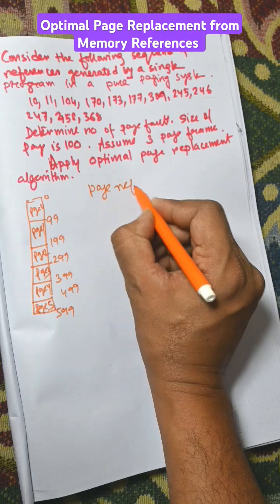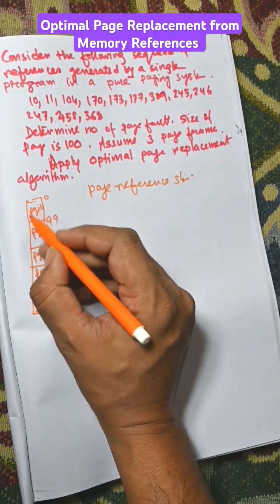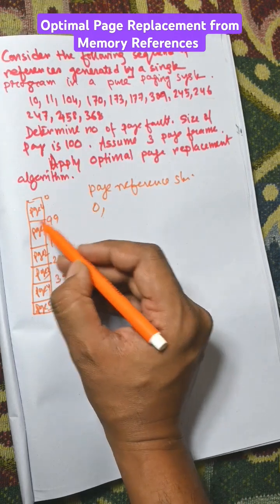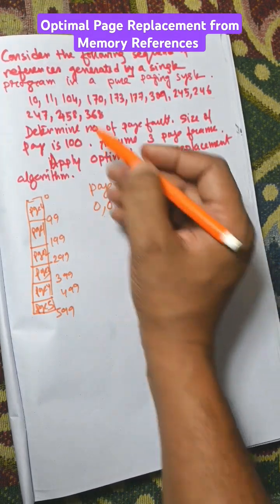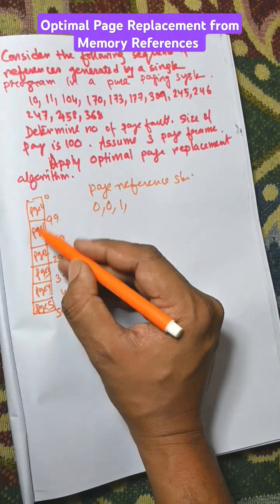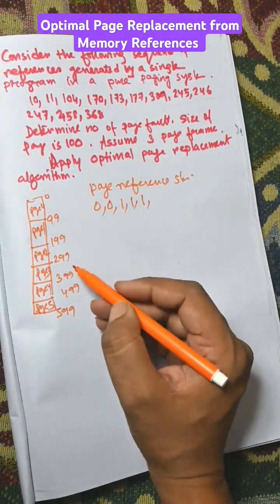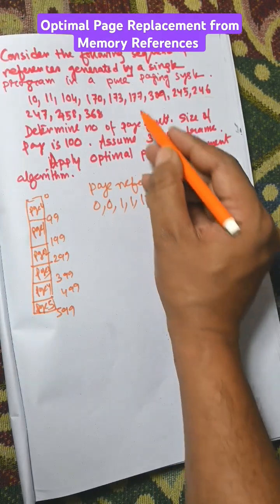Page reference string: for address 0 it is available in page 0, for 11 it is available in page 0, for 104 it is available in page 1, 170 in page 1, 173 in page 1, 177 also in page 1.